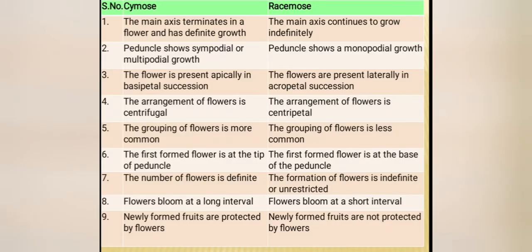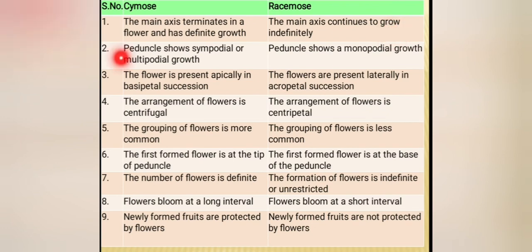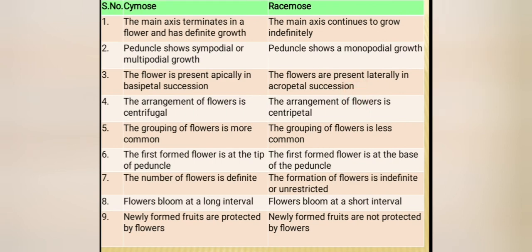Here the differences are explained, which were already explained at the start of the video. In cymose, main axis terminates in flower so growth is definite. In racemose, the terminal end is not utilized in flower formation so growth is indefinite. Peduncle shows sympodial or multipodial growth in cymose - meaning many branches are there. Here in racemose, monopodial growth. Flowers are present in basipetal succession in cymose and acropetal succession in racemose. Arrangement of flowers: centrifugal in cymose and centripetal in racemose.